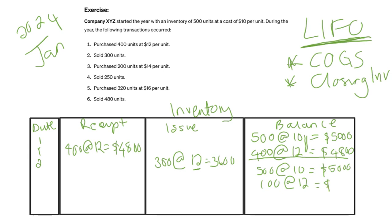On January 3rd, we purchase 200 units at $14 per unit. That's 200 × 14 = $2,800. Our balance now includes 200 units at $14 equal to $2,800, in addition to the previous layers.